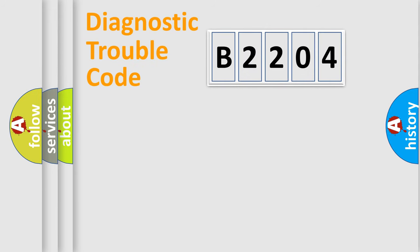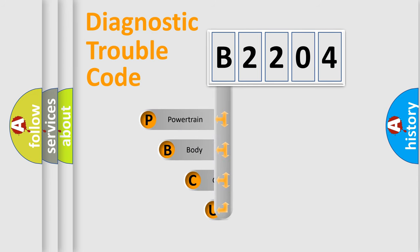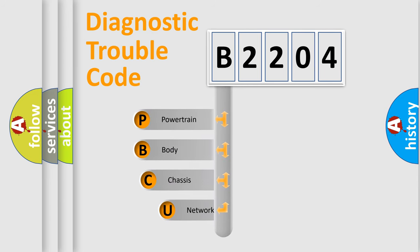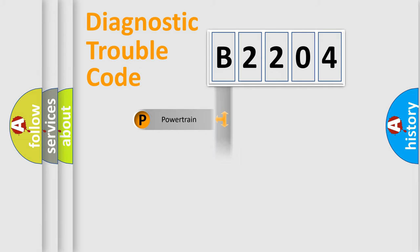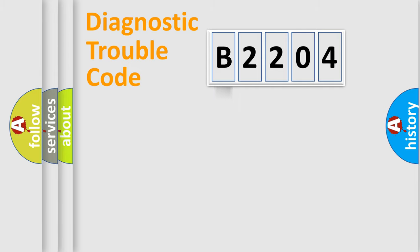Let's look at the history of diagnostic fault code composition according to the OBD-2 protocol, which is unified for all automakers since 2000. We divide the electric system of the automobile into four basic units: Powertrain, Body, Chassis, and Network.